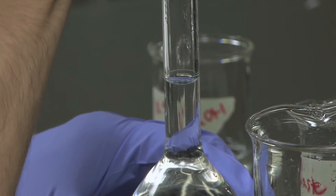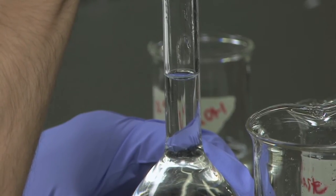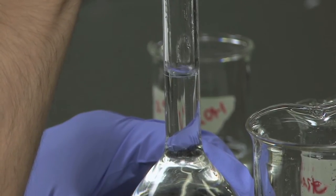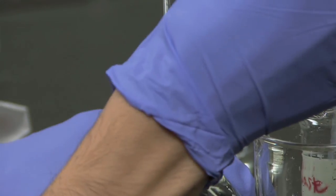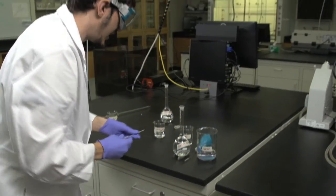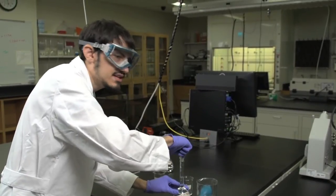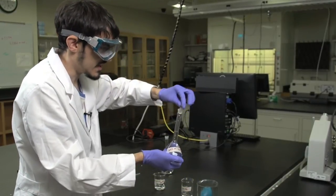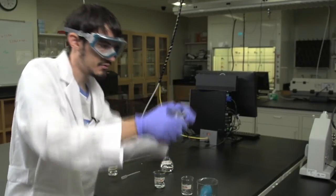You want to make sure that you are patient with this process. Once the bottom of the meniscus is just above the line, you are now ready to invert the flask 15 times, making sure that you have capped it and secured the cap as you go back and forth.